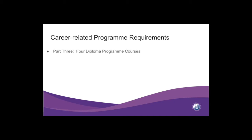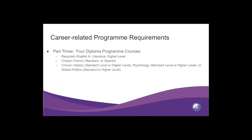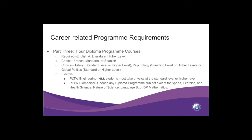Part three of the Career Related Program requirements is the Diploma Program courses you are required to take. You are required to take four Diploma Program courses in the Career Related program. All students are required to take English at the higher level. You have a choice of French, Mandarin, or Spanish. You have a choice of history, psychology, or global politics, all three of which are offered at either the standard or higher level. You also have a choice of an elective. Please note that all Project Lead the Way Engineering students must take physics at the standard or higher level. All Project Lead the Way Biomedical students can choose any Diploma Program subject except for Sports Exercise and Health Science, Nature of Science, a Second Language B, or DP Mathematics.